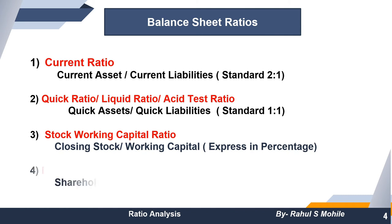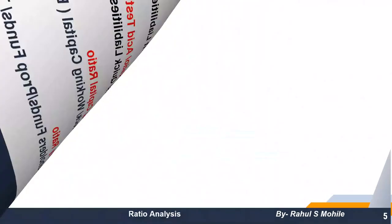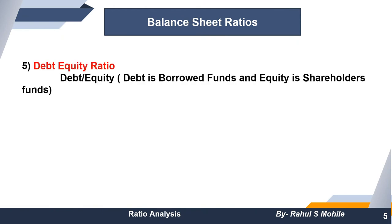The fourth ratio is called proprietary ratio — also related to shareholder funds. The formula is shareholder funds (or proprietor funds) divided by total assets, multiplied by 100. Total assets here means fixed assets including investments plus working capital, or fixed assets including investments plus current assets.